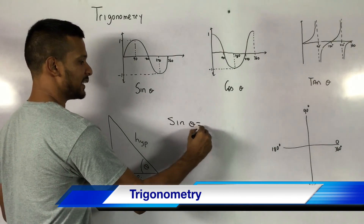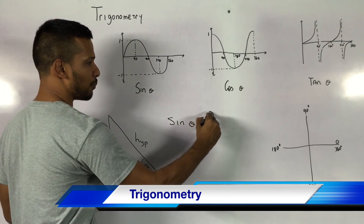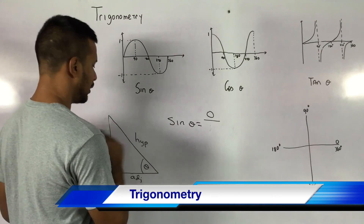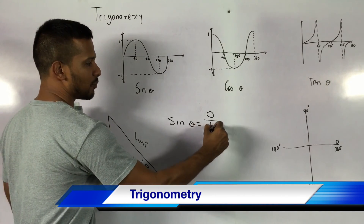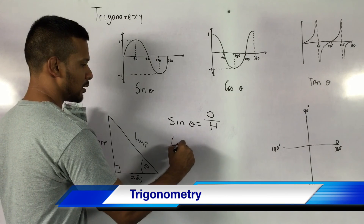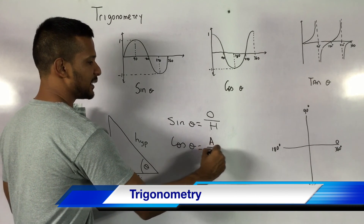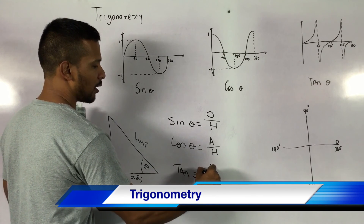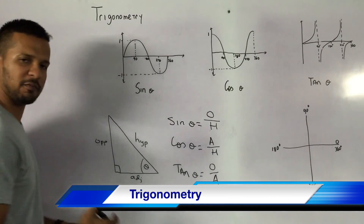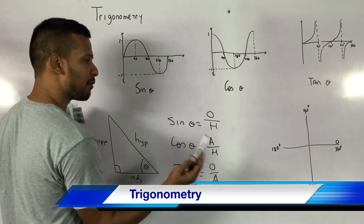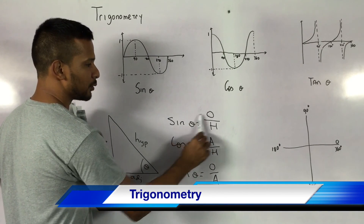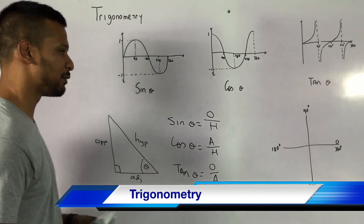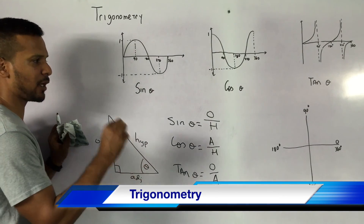Sine theta is opposite over hypotenuse. Cos theta is equal to adjacent over hypotenuse, and tan theta is equal to opposite over adjacent. We should be familiar with this from before. To remember it, you can use SOH-CAH-TOA, or 'Oh Hell, Another Hour' — whatever helps you remember it. So we have these functions and we're now going to go more in depth into sine, cos, and tan.